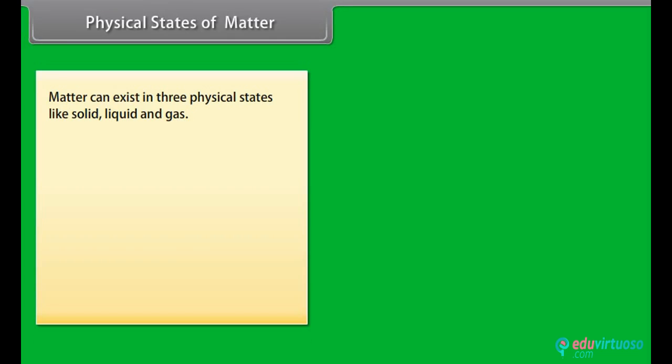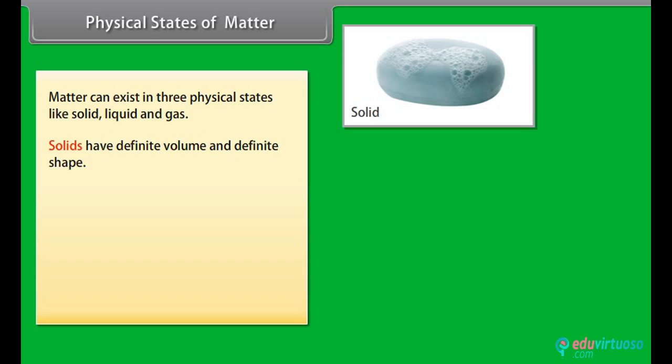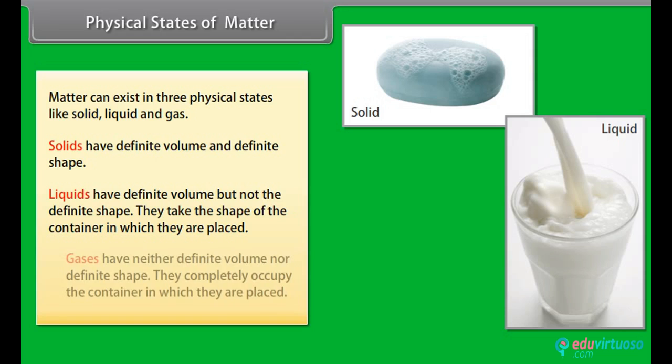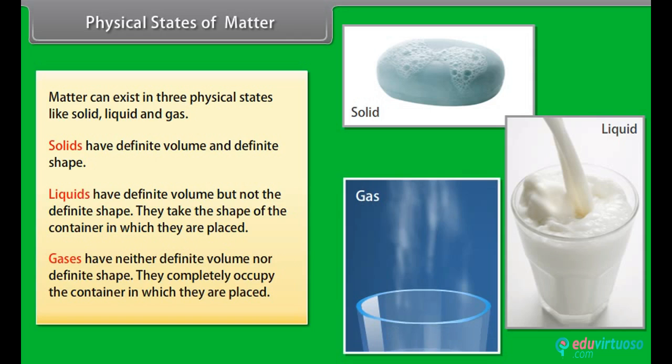Matter can exist in three physical states like solid, liquid and gas. Solids have definite volume and definite shape. Liquids have definite volume but not the definite shape. They take the shape of the container in which they are placed. Gases have neither definite volume nor definite shape. They completely occupy the container in which they are placed.